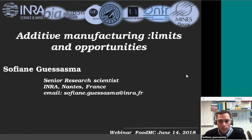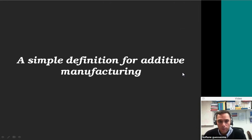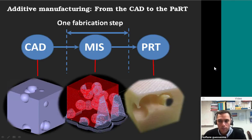Before going any further, let me give you a small, simple definition for additive manufacturing. It's known as 3D printing for the public, but we can define it as the manufacturing of parts or a product based on a digitalized model, and we use the layering of the structure to achieve a three-dimensional feature.